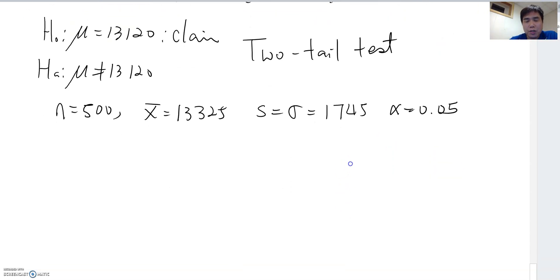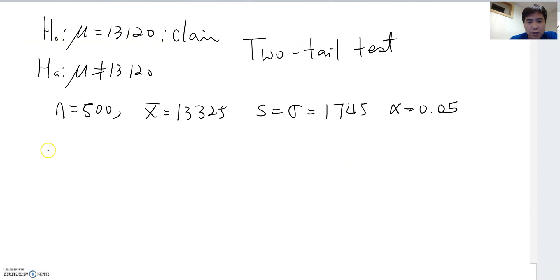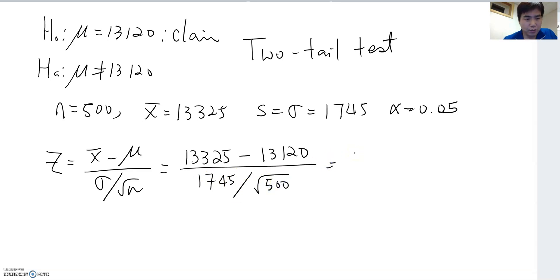And now, using the Z-score formula. Z equal to X bar minus mu over sigma divided by square root N. Then this becomes 13,325 minus 13,120 over 1745 divided by square root 500. You will get 2.6268 like that. So you round to two digits and become 2.63 here.